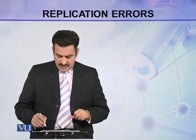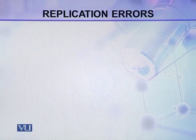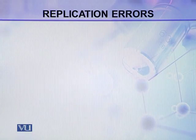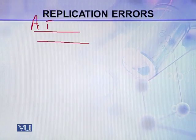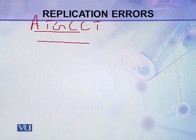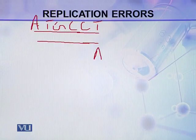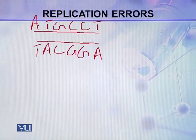Here I can try to explain a little more about this misincorporation. This is a double-stranded DNA. It has some sequence — for example, A, T, G, C, C, T on one strand. On the other strand, it will have the complementary bases: A, G, G, G, C, A, and T.